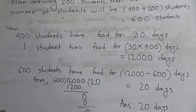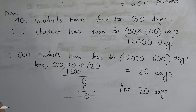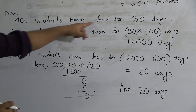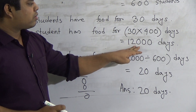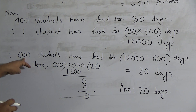I hope you have understood. Just like this, we shall solve question C. But this time, 40 students leave. If 40 students leave from the hostel, how long will the food last? After leaving 40 students, we find the number of students. Then we do the same: 400 students have food for 30 days, 30 multiplied by 400 gives 12,000 days. Then we write 360 instead of 600 and solve.